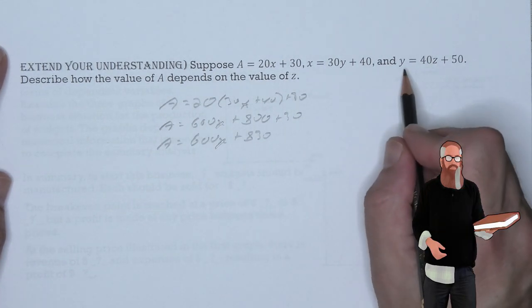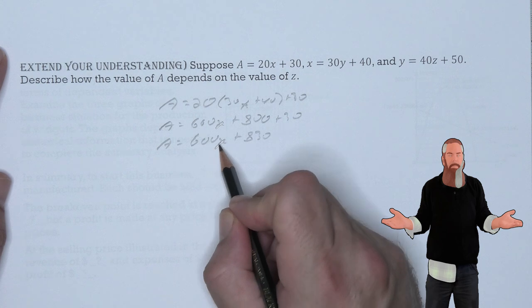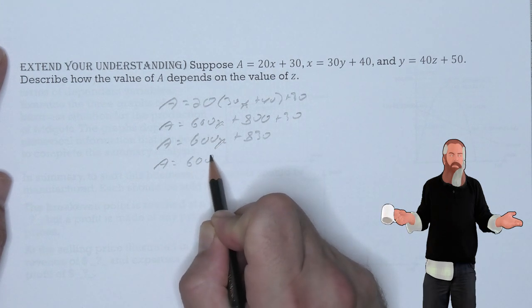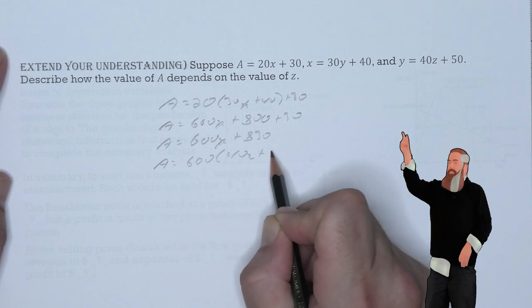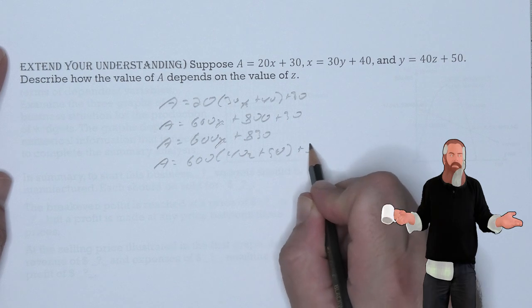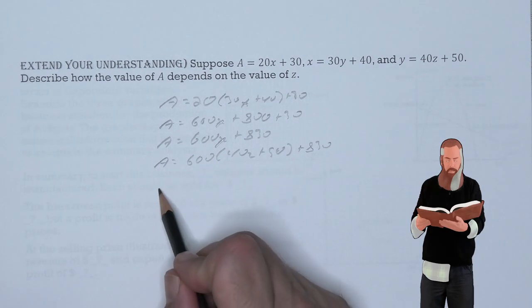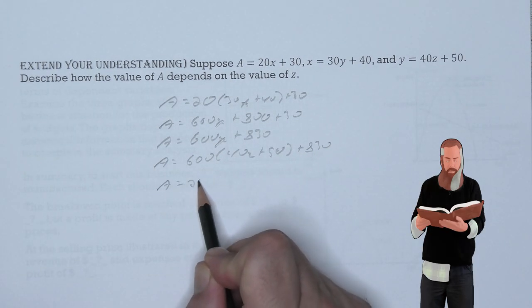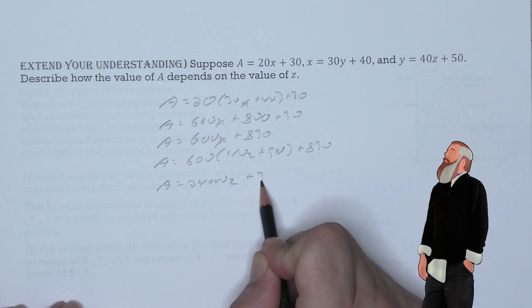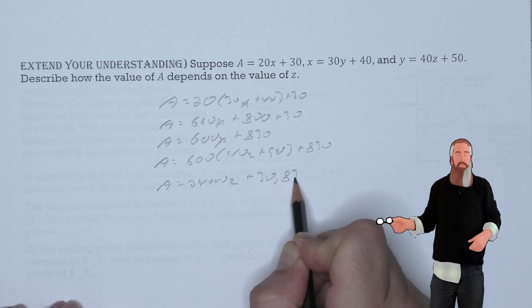Now, we're going to substitute those values of Y in for Y in the A equation. So that A is 600 times 40Z plus 50 plus 830. This means that A is 24,000Z plus 30,830.